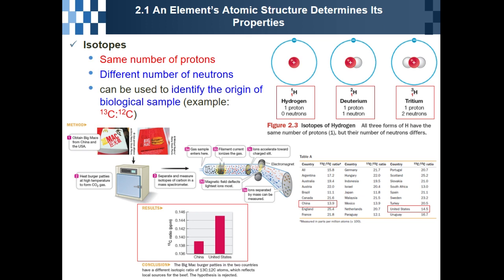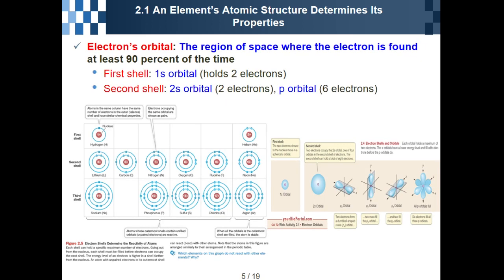So isotopes can be used to identify the origin of biological samples — this is a very famous application. Now we will cover electron orbitals. Most of you have already learned chemistry, so today I will briefly explain electron orbitals.